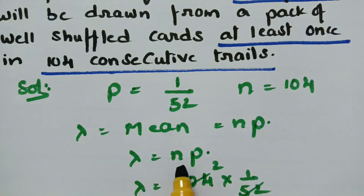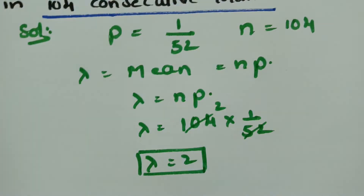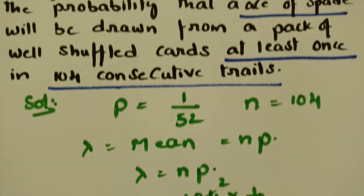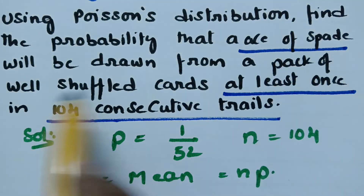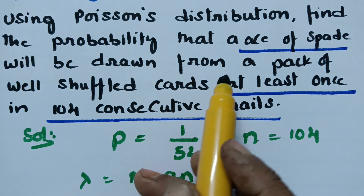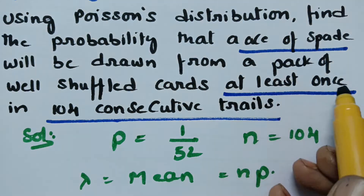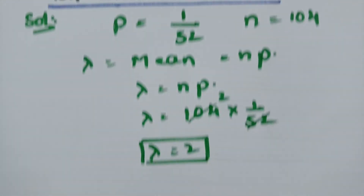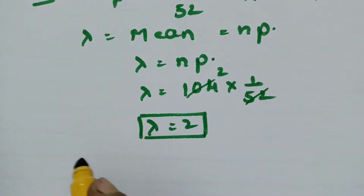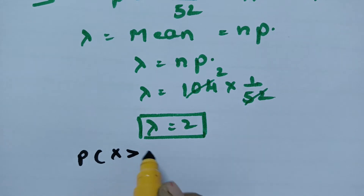The lambda value is equal to n into p, that is 104 into 1/52, so lambda is equal to 2. Now we have to find the probability that the ace of spade will be drawn from a pack of well shuffled cards at least once. At least once means minimum once, so that is the probability of x greater than or equal to 1.